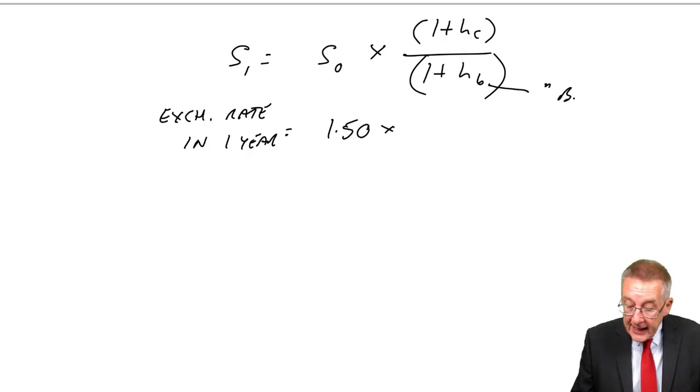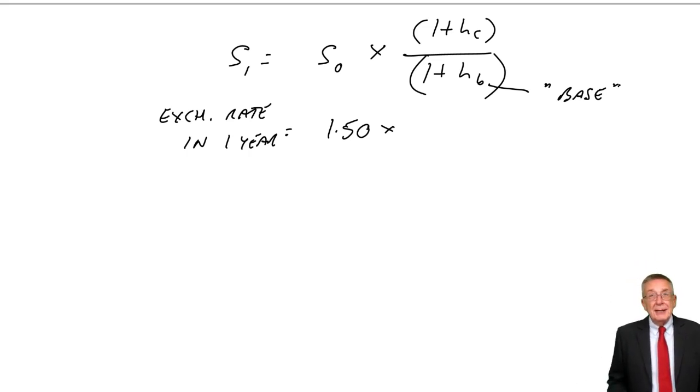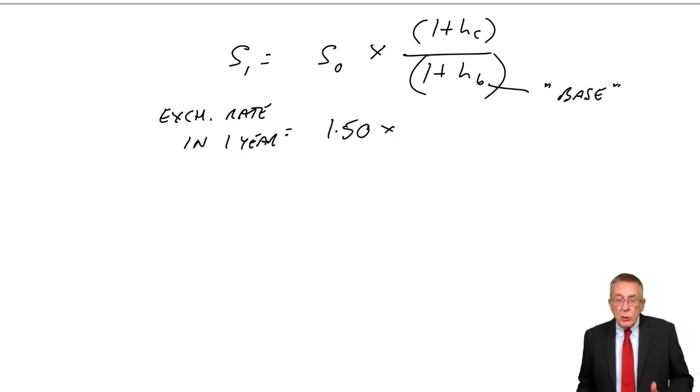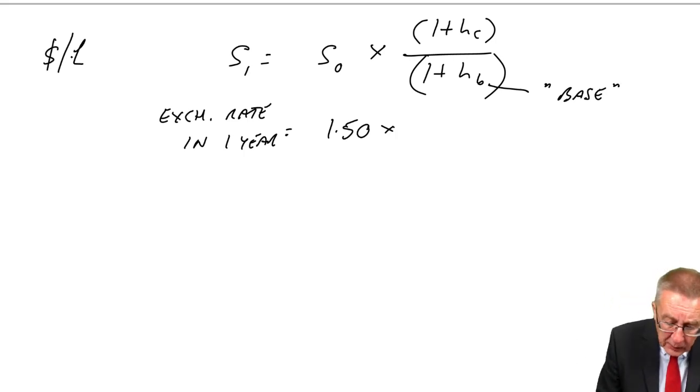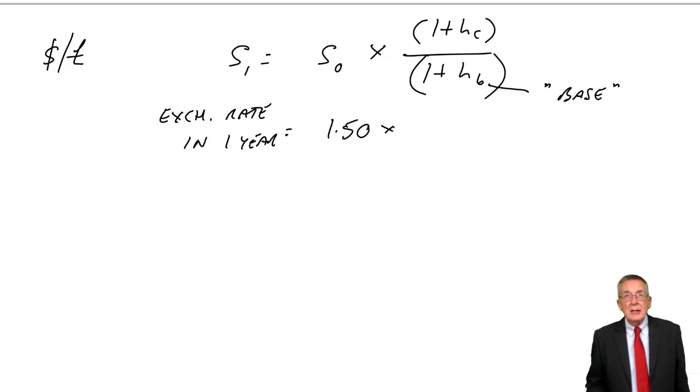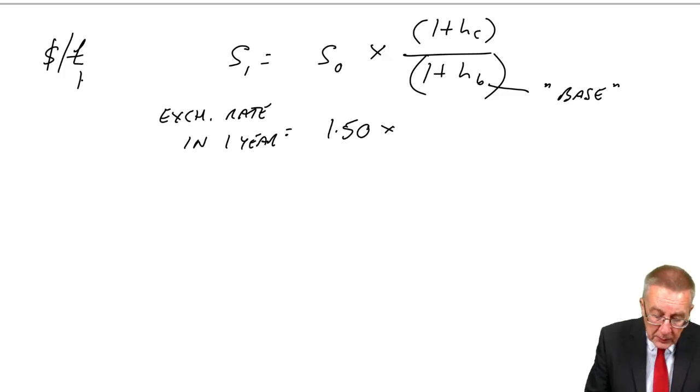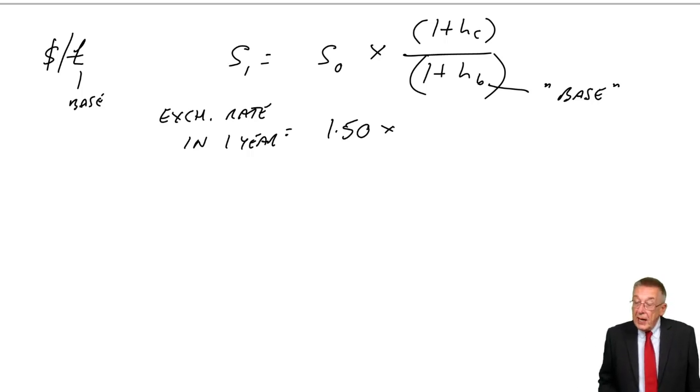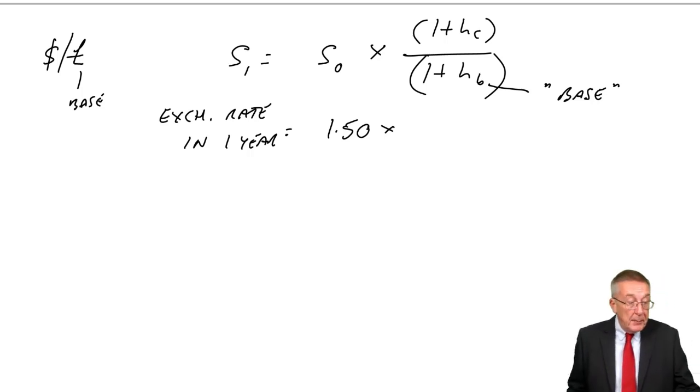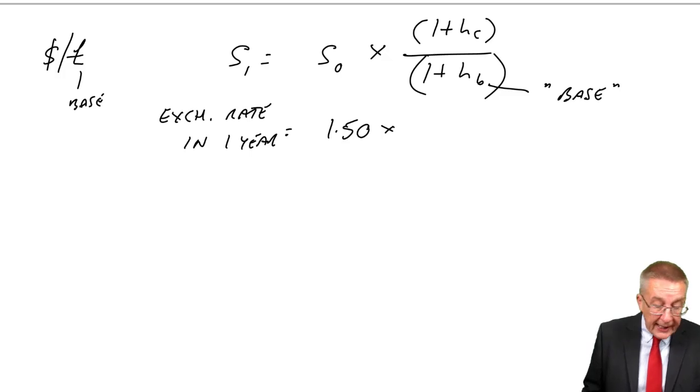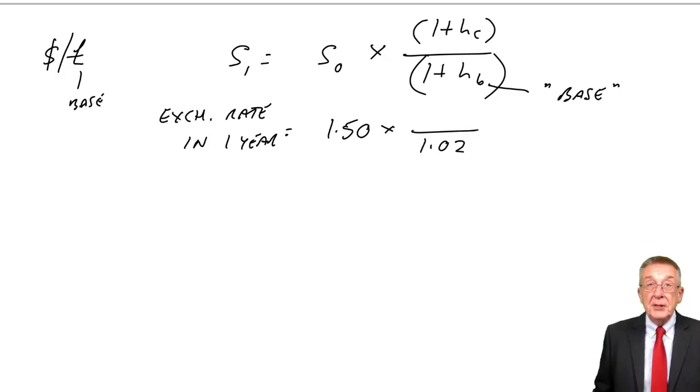It's just making sure you're happy with which country is which. The way I remember it, B is what I call the base country. What I mean by that is the currency against which it's being quoted. If you remember, these were dollar-pound exchange rates. How many dollars is equal to one pound? The pound is the base country. So HB, the inflation rate in the base country, which is the pound, the UK, it's 2%, it's 1.02.